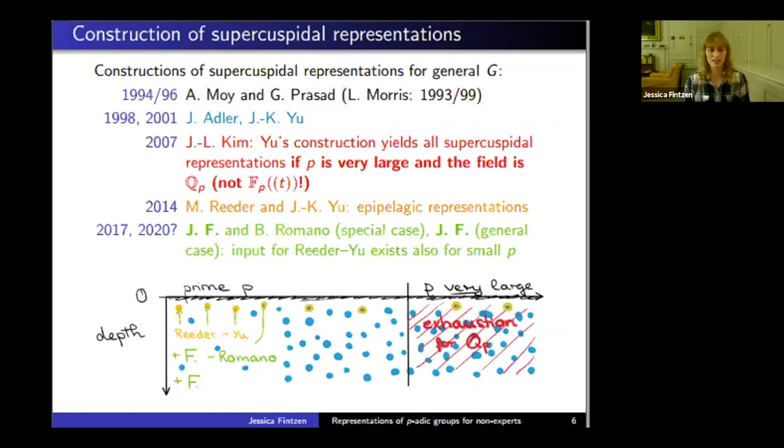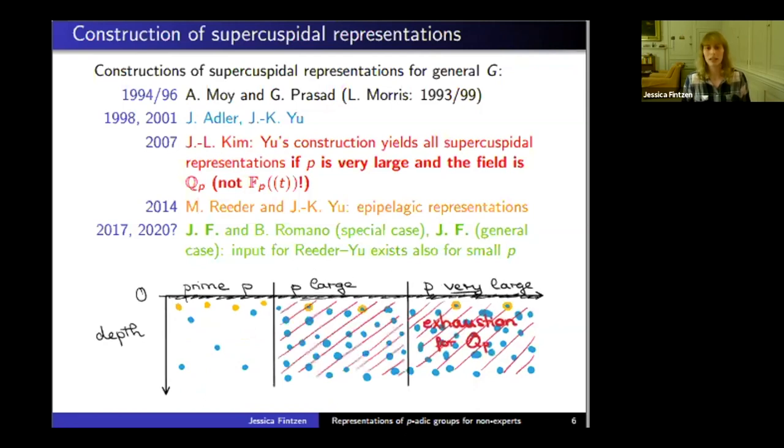On the other hand, a very natural question to ask is: when do we get all representations? It turns out that if p is large—not just very large—that suffices to get all representations. We only need a very minor assumption on p to get exhaustion.